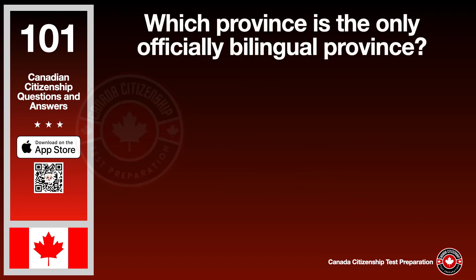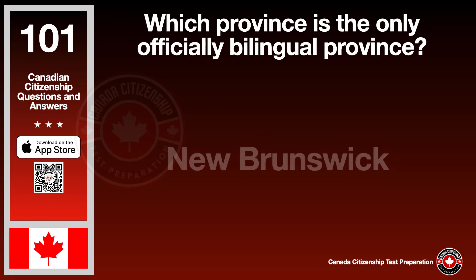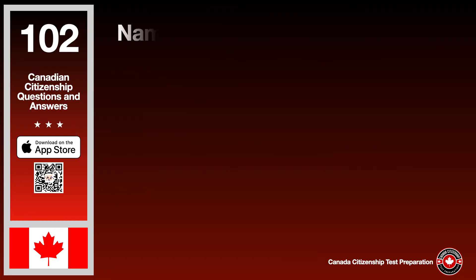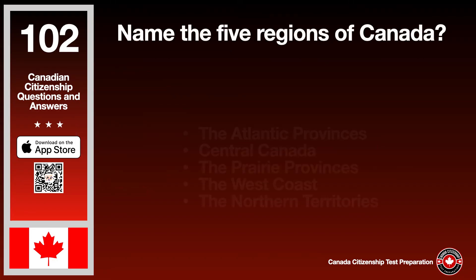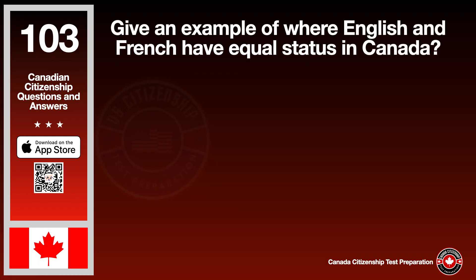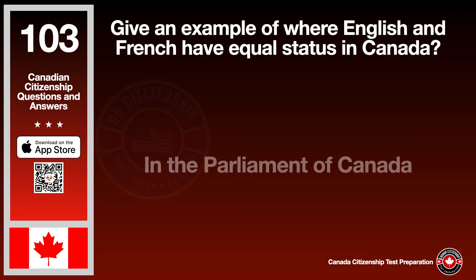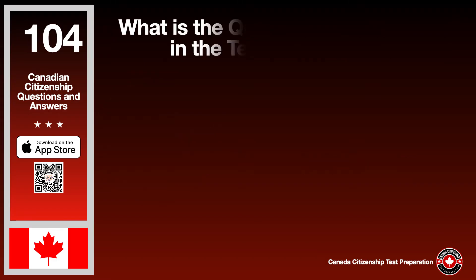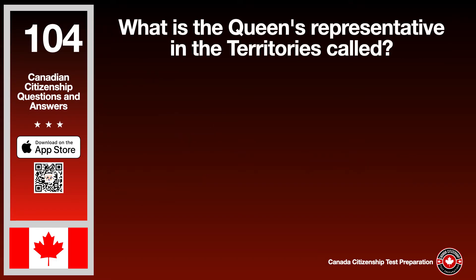Which province is the only officially bilingual province? The answer is New Brunswick. Name the five regions of Canada. The answer is the Atlantic provinces, Central Canada, the prairie provinces, the west coast, and the northern territories. Give an example of where English and French have equal status in Canada. The answer is in the Parliament of Canada. What is the Queen's representative in the territories called? The answer is Commissioner.